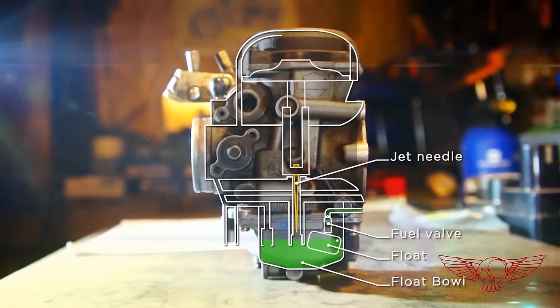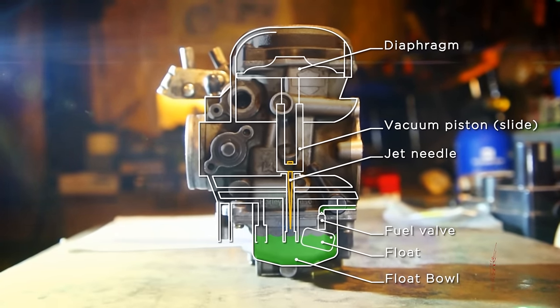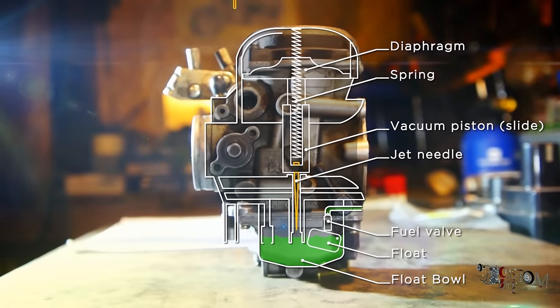In the upper part of the carburetor we have the jet needle, the vacuum piston or slide, and the diaphragm. The whole assembly is kept in place by a spring.